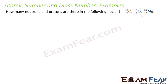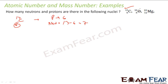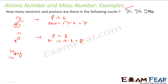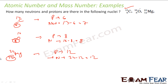How many neutrons and protons are in each nucleus? For Carbon-13 (6, 13): protons = atomic number = 6; neutrons = 13 − 6 = 7. For Oxygen-16 (8, 16): protons = 8; neutrons = 16 − 8 = 8. For Magnesium-24 (12, 24): protons = 12; neutrons = 24 − 12 = 12. Remember: atomic number determines the number of protons and thus the element's properties.